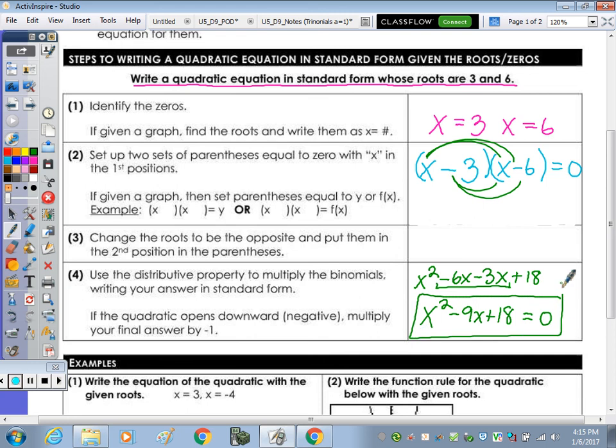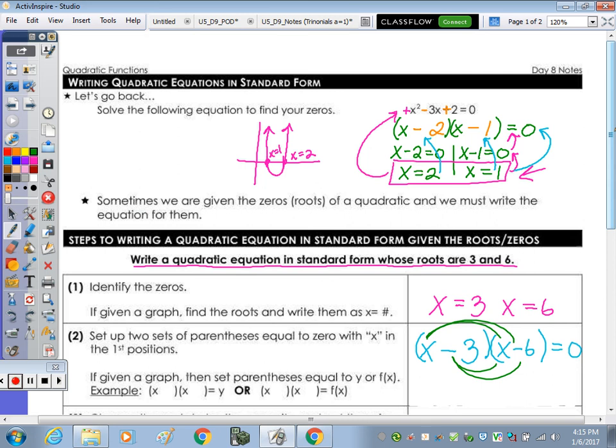Because those roots, going back to the picture, are where the parabola intersects the x-axis. And that's where our y value equals 0.